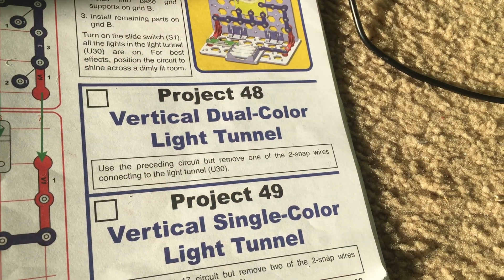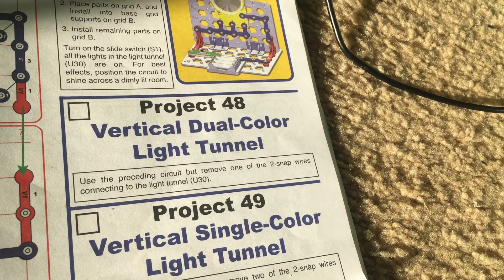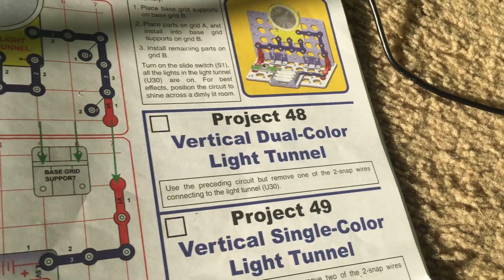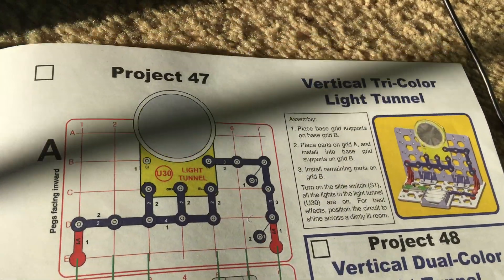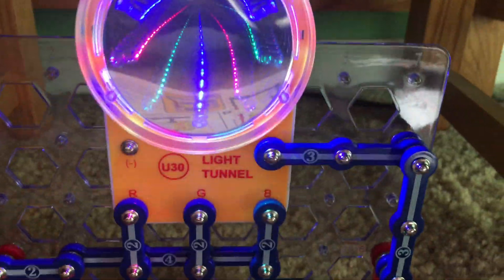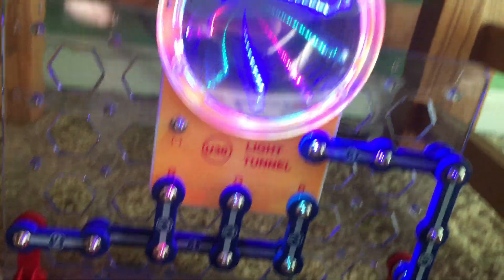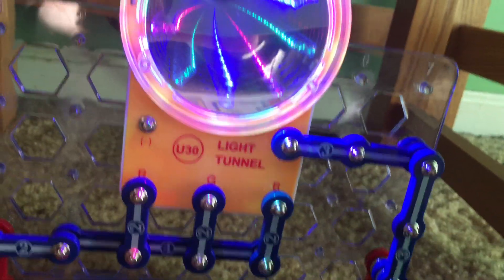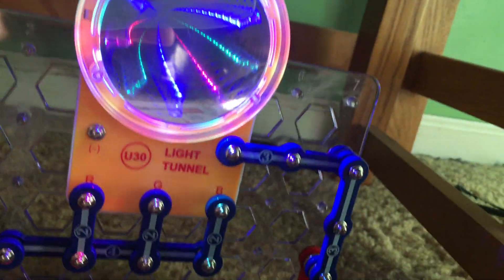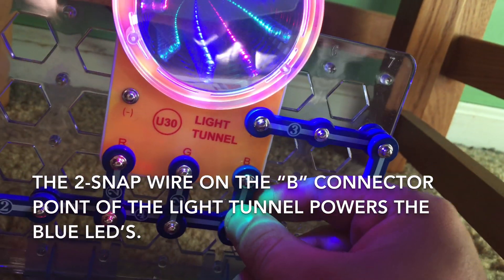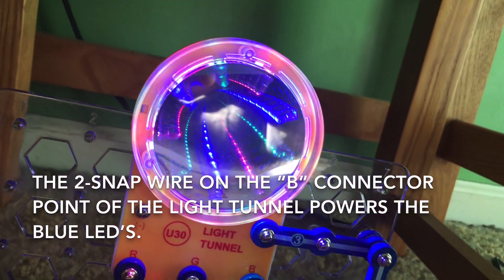Project 48, Vertical Dual Color Light Tunnel. We're going to use the same circuit as in Project 47. But, we are going to remove one of the three two-snap wires that are connected to the light tunnel. I am going to remove the one that powers the blue LEDs.